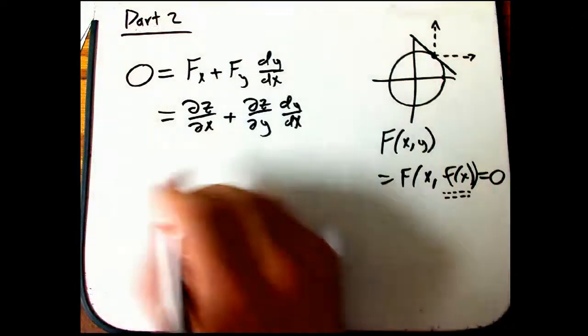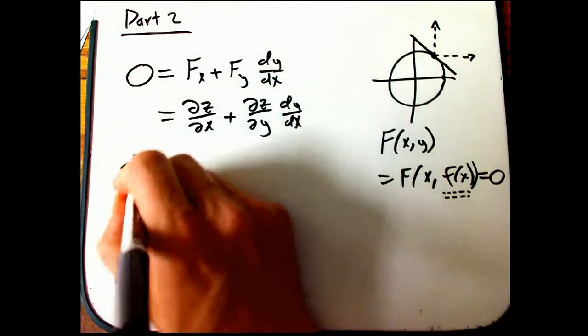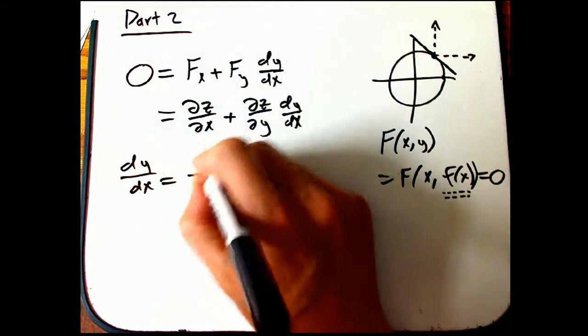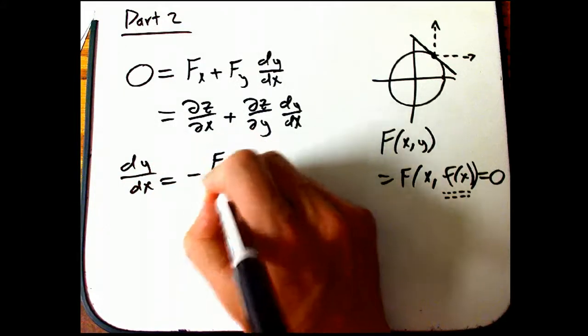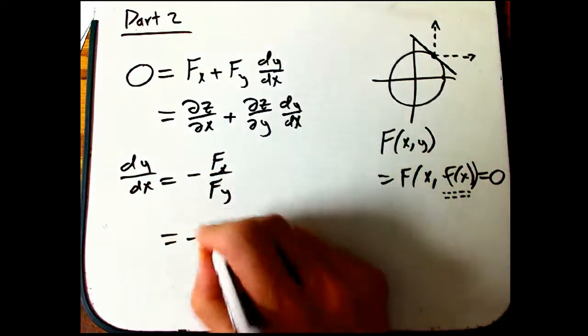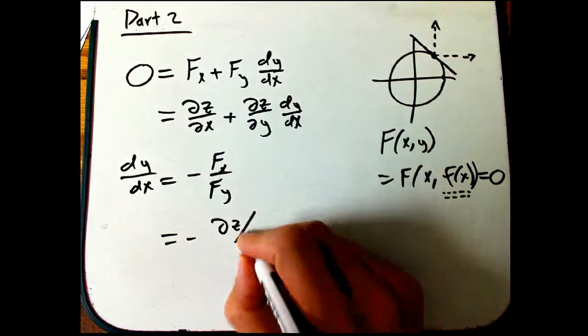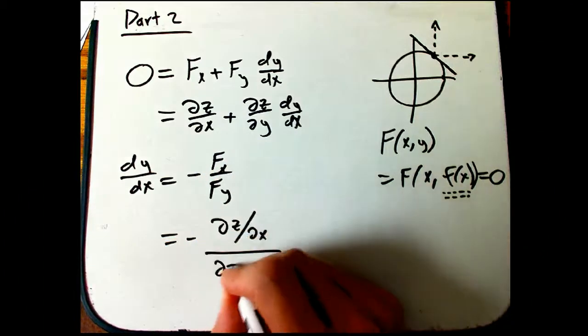So we're about to solve for this. Here's where we got to, it's easy to solve. You get minus fx over fy in that notation or minus dz by dx over dz by dy.